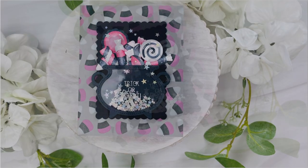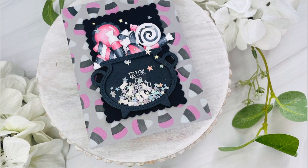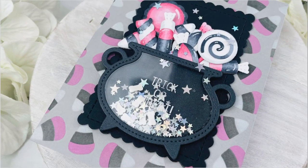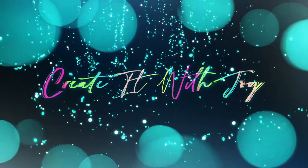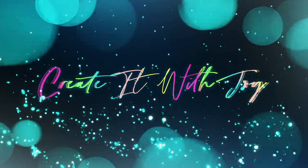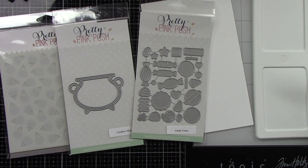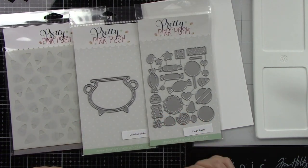Hey everyone, it's Joy here. Welcome back to my channel. Today I'm sharing a super fun non-traditional colored Halloween card with newer products from Pretty Pink Posh. I think they were released last month. They're pretty new, so we're going to make a shaker card today using the cauldron shaker die, the candy treats die, and the layered candy corn stencil.